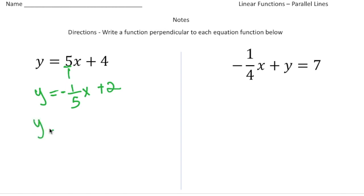Let's do one more example. I could say y equals negative one-fifth x, and then say minus one. Again, the slope is what makes it perpendicular to the first equation.